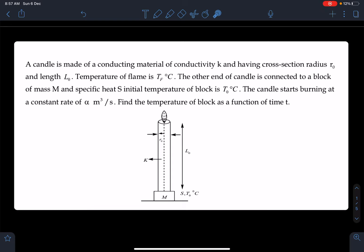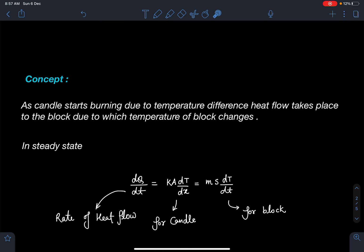Let's discuss the concept part of this problem. As candle starts burning, due to temperature difference heat flow takes place to the block due to which temperature of the block changes. Since conductivity of this candle is given, you can understand that the flame temperature is higher and block temperature was lesser, so heat flow will take place from flame to block.